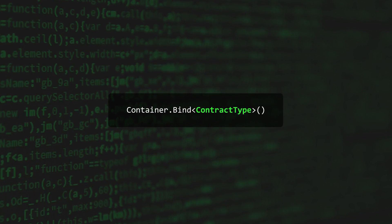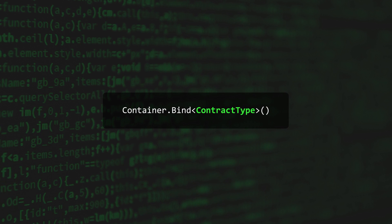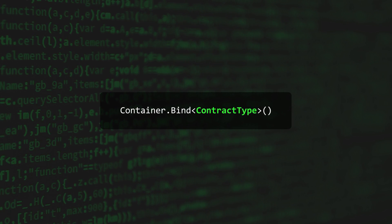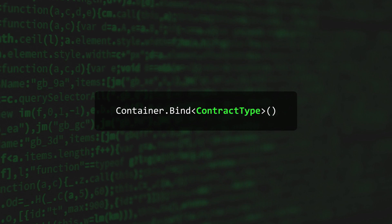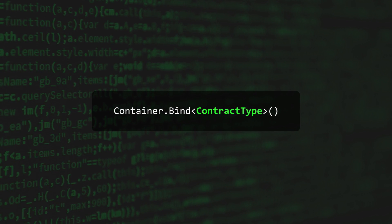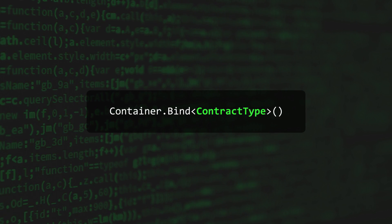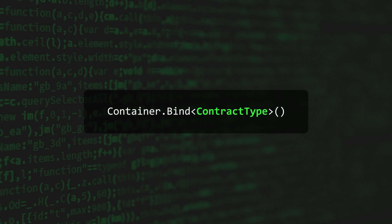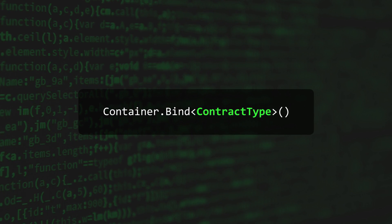We'll talk about how to add bindings to the container, but first let's look at the anatomy of a binding statement. In Zenject, a binding statement consists of a call to the container's Bind method. ContractType tells the container which type you want to map the instance to — it corresponds to the type that you used in your injections. In its simplest form, a binding statement tells the container to use C#'s new operator to create and inject a new instance of the contract type into each class that needs it.